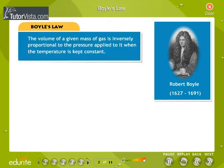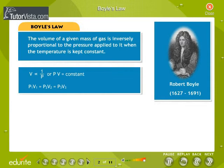That is, if V is the volume of a given mass of the gas subjected to a pressure P at a constant temperature, then V is inversely proportional to the pressure applied, or PV is a constant. This can be written as P1V1 equals P2V2 equals P3V3.